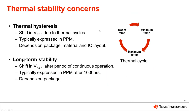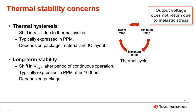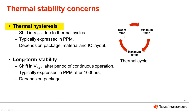Unlike the temperature drift, thermohysteresis is a shift in performance that occurs when a device is cycled through temperature extremes. Let's assume that a voltage reference output is measured at room temperature, then subjected to hot and cold extremes, and finally brought back to room temperature. The reference output will not return to the initial value, because the device was subjected to inelastic stress from the temperature cycle — called thermohysteresis — which causes a shift in the operating performance of the device.